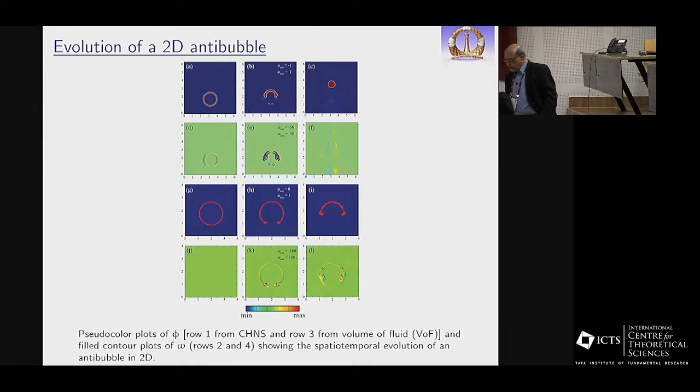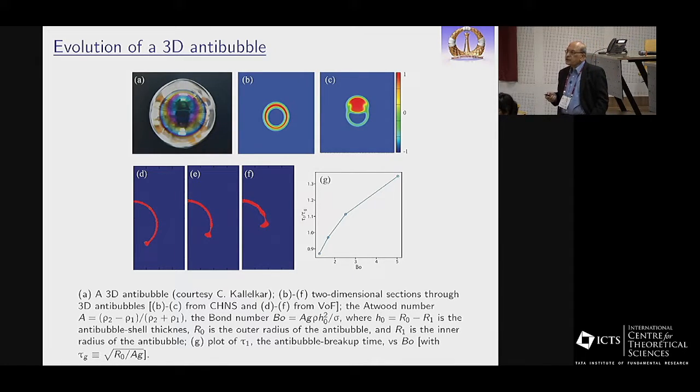Here's the anti-bubble example from our direct numerical simulations. You start with this ring in 2D, and there is a low-density fluid here and blue is the high-density fluid. The north pole bulges, the south pole thins and eventually breaks, then you get these arms that retract. You can also follow the vorticity field. You can calculate things like the anti-bubble breakup time τ plotted versus a dimensionless measure of the surface tension, and these plots do exactly what is seen in experiments.